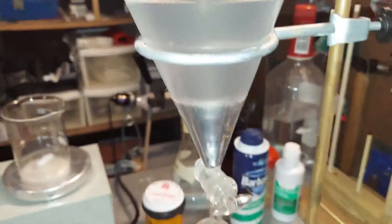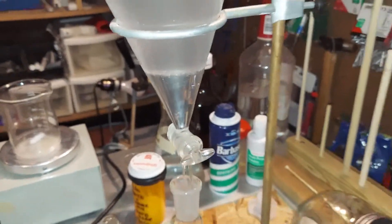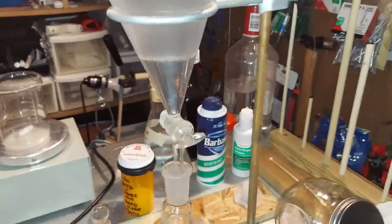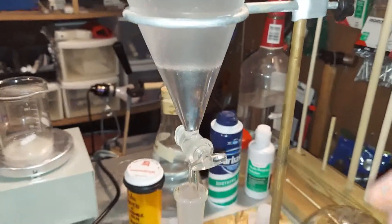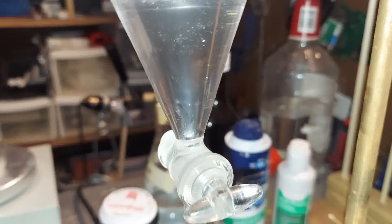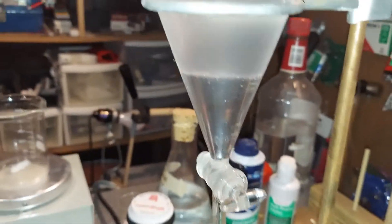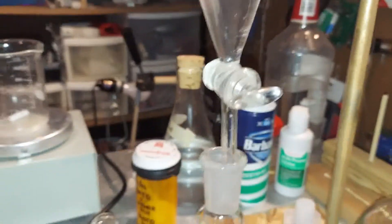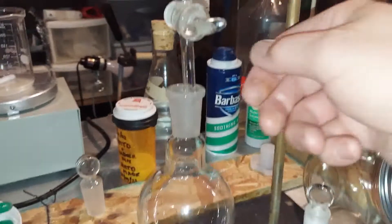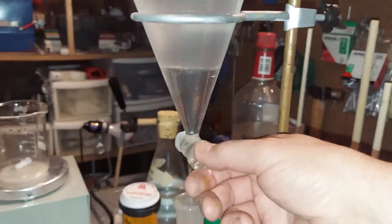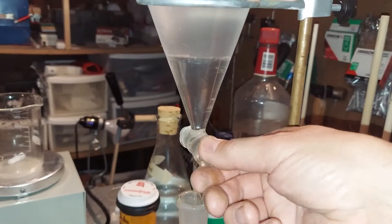So I mixed the salt solution and the chloroform by picking up the entire stand and shaking it around. I didn't want to undo all the clamps and everything. So it's all set. You can see how much clearer the chloroform is at the bottom, and the salt solution is sitting at the top there. So we're going to now empty the chloroform into this round bottom flask here.